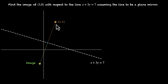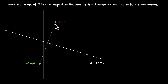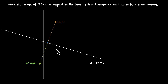If you are standing here and your image is here, this line should be perpendicular to the mirror. Also, this length should be equal to this length — how far you are from the mirror should be the same as how far your image is from the mirror. So this length equals this length, and this line is perpendicular to this line. Let's use both of these properties to figure out the image.